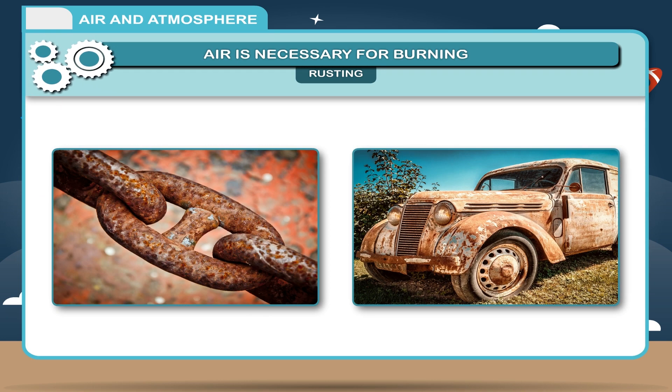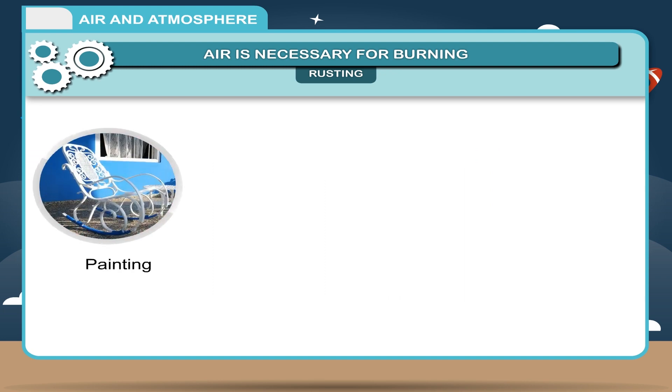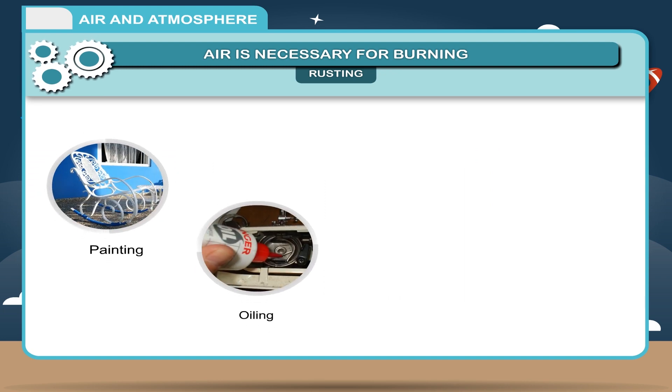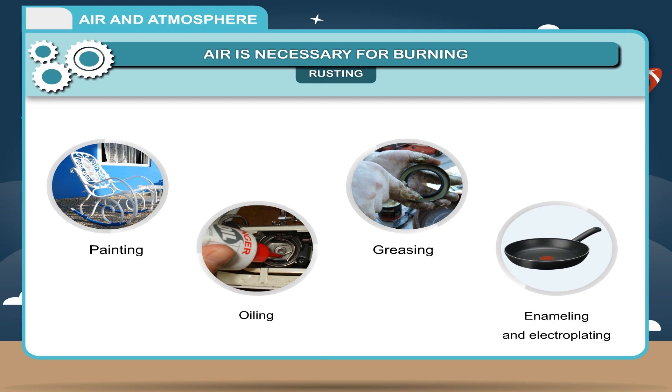Rusting is a phenomenon which makes iron weak and it loses its strength. It is prevented by painting, oiling, greasing, enameling and electroplating iron articles which prevent oxidation of iron by air in the nature.